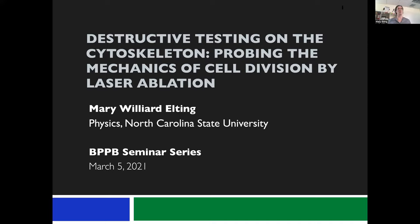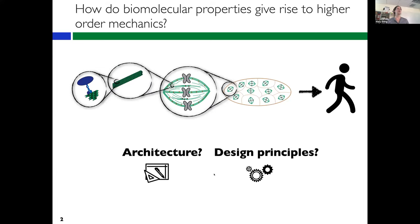I'm going to tell you today about some work from my lab using laser ablation to probe the mechanics of the mitotic spindle when cells divide. The broad question that my group is interested in at NC State in the physics department is how biomolecular properties at the protein scale or molecular scale give rise to higher order mechanics — how cellular-scale structures emerge from molecular parts, how they interact and have emergent properties on the cellular scale, and what might be design principles true across many different cytoskeletal structures in the cell.